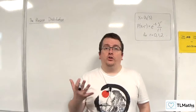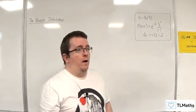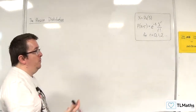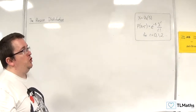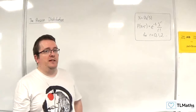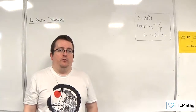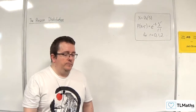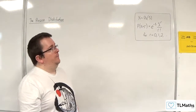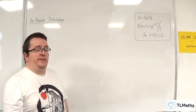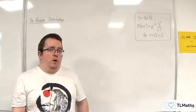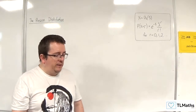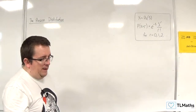In this video, I want to show you why E(x) for the Poisson distribution is just lambda. I want to derive that. This is an extension video, so you won't be expected to replicate this in the exam, just to be clear.